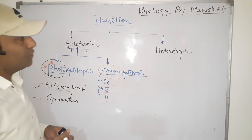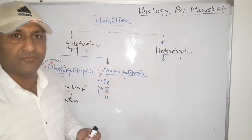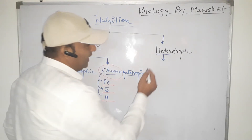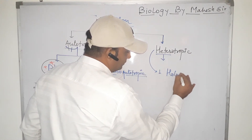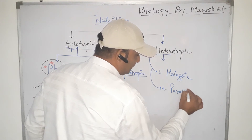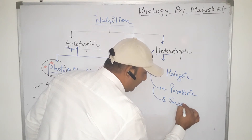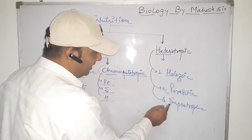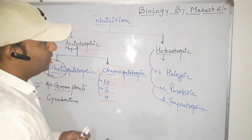Next is heterotrophic nutrition. Heterotrophic nutrition means the type of nutrition in which organisms are unable to prepare their own food, so they depend on other organisms for food. That is called the heterotrophic mode of nutrition. It can be classified into three types: holozoic nutrition, parasitic mode of nutrition, and saprotrophic mode of nutrition.